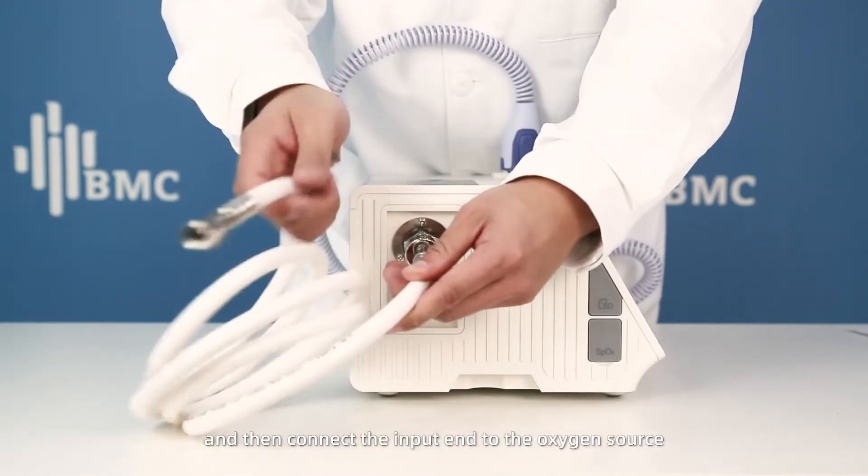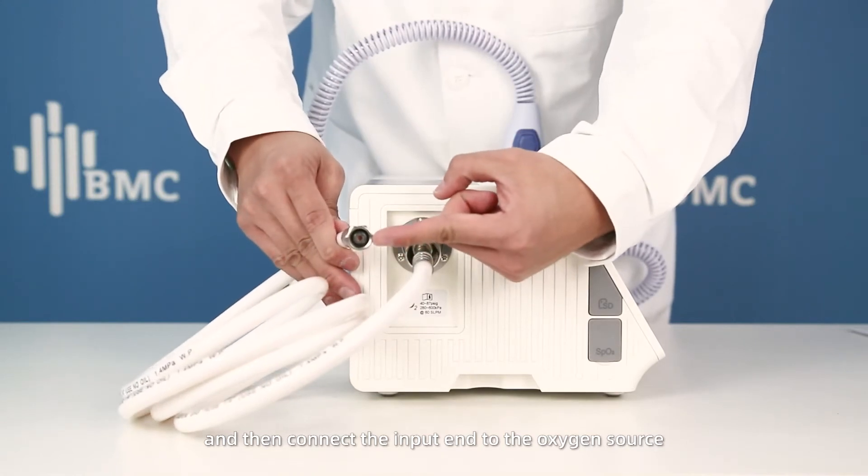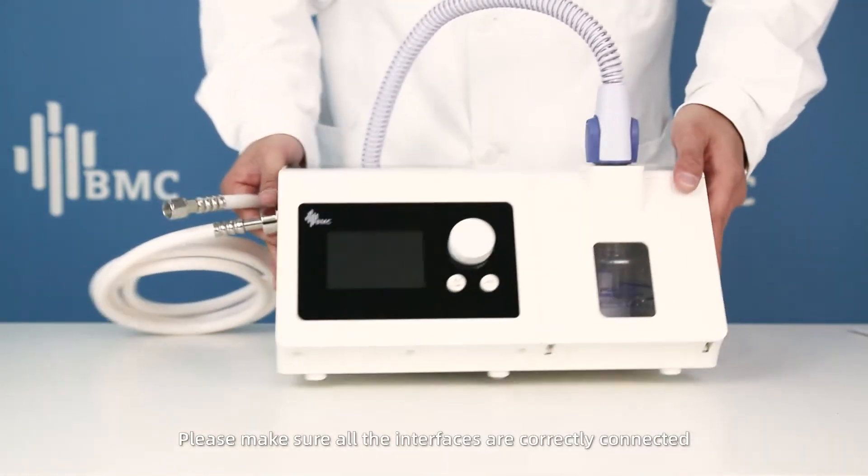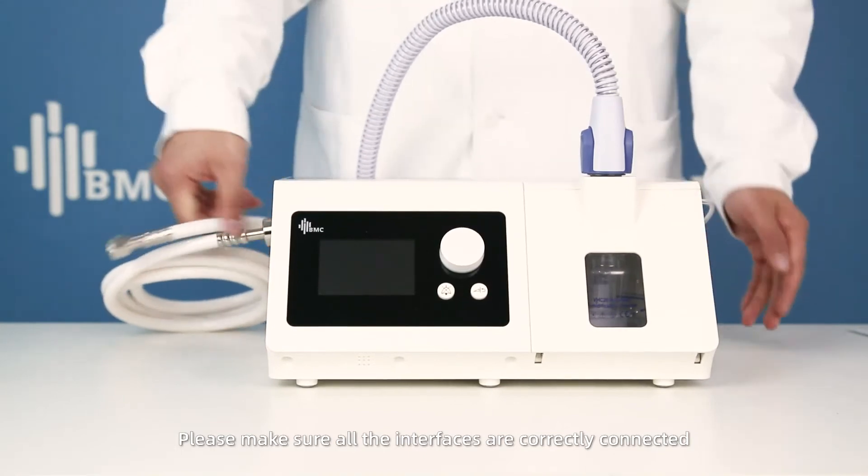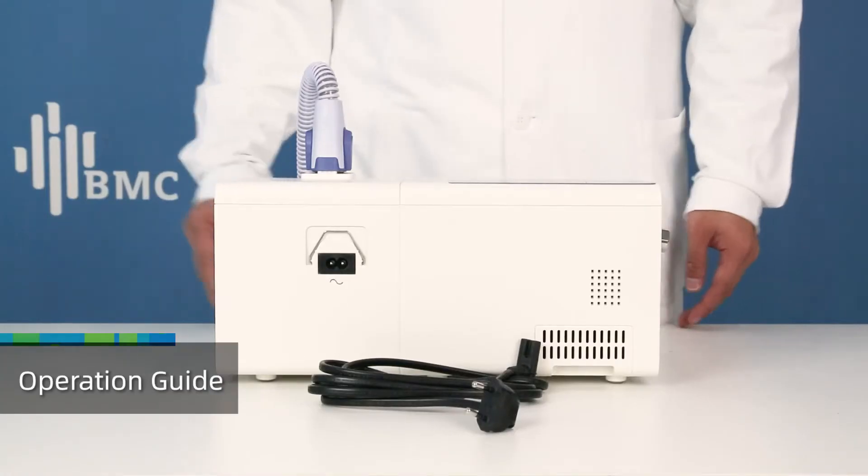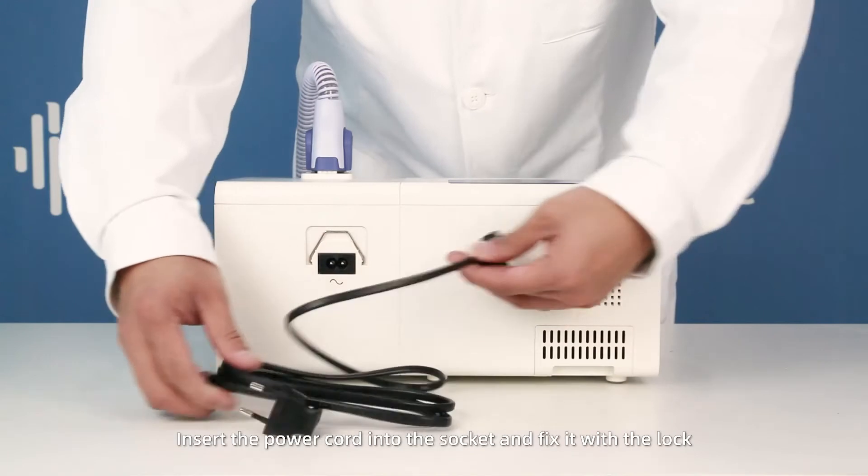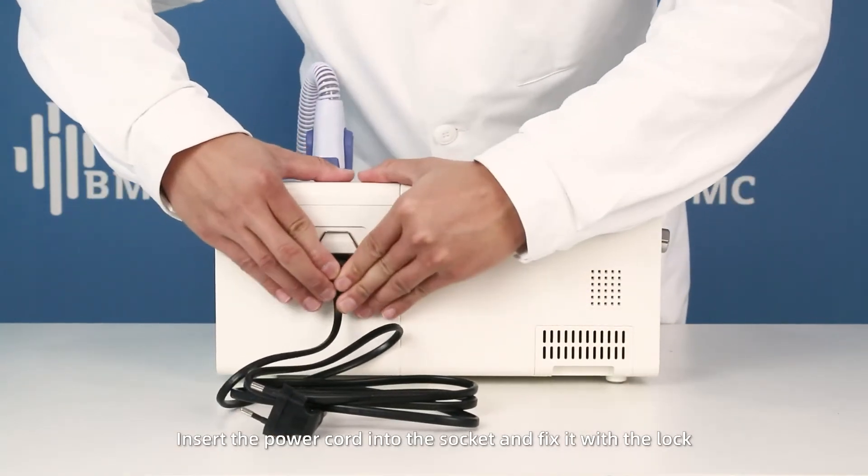Then connect the input end to the oxygen source. Make sure all the interfaces are correctly connected. Operation guide: Insert the power cord into the socket and fix it with the lock.